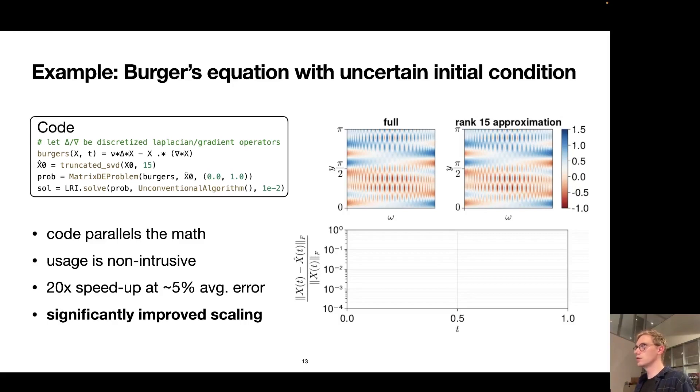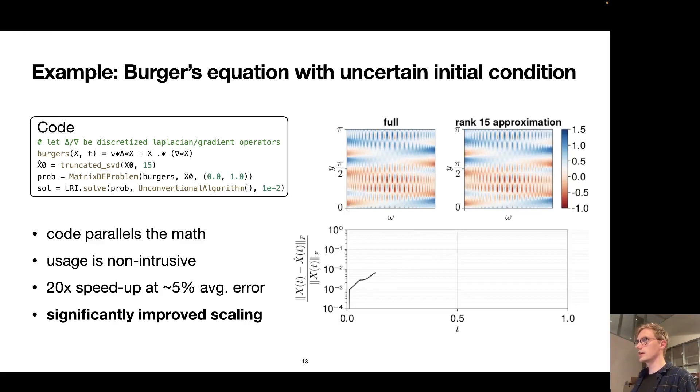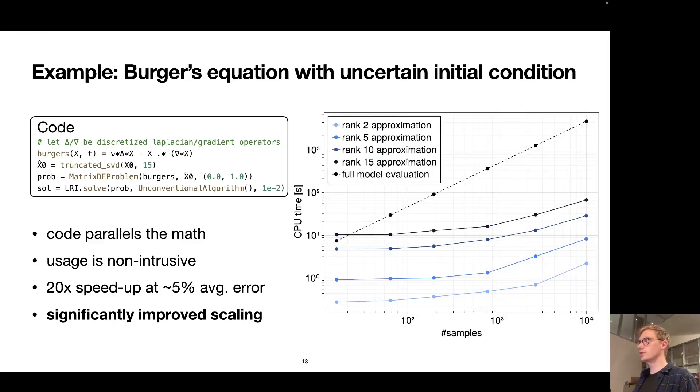Using LowRankIntegrators.jl now requires us only a few lines of what I would call pretty intuitive code to apply dynamical low-rank approximation to find an approximate solution to this problem. If we compare the solution to the full solution, meaning where we actually solve this problem or this PDE very accurately for all the different initial conditions separately, we actually see that we incur only a five percent error for rank 15 approximation but in return gain a 20x speed up. But more importantly, we see that this approach is a lot more scalable than sampling naively in the sense that the scaling is sublinear with the number of samples that we draw.